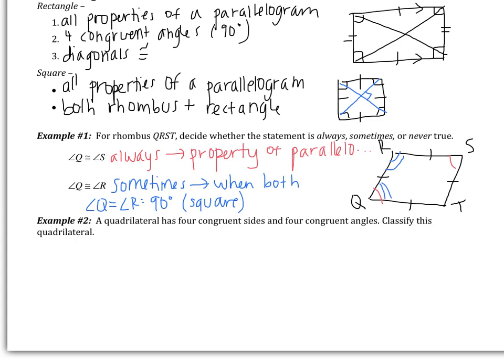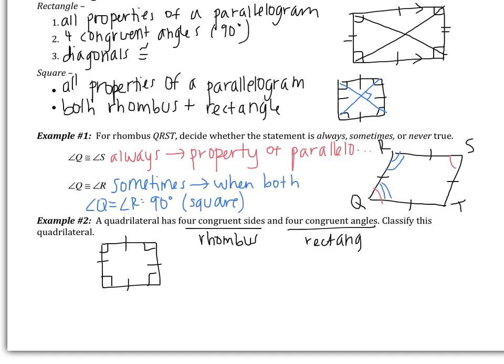Example number two: a quadrilateral has four congruent sides and four congruent angles. Classify this quadrilateral. Four congruent sides make it a rhombus. Four congruent angles — so they're all 90 degrees — makes it a rectangle. So this figure is both a rhombus and a rectangle, which makes it a square. The square is like the child of rhombus and rectangle. If rhombus and rectangle came together and had a child, it would be the square — that's why the square has all the properties of both.